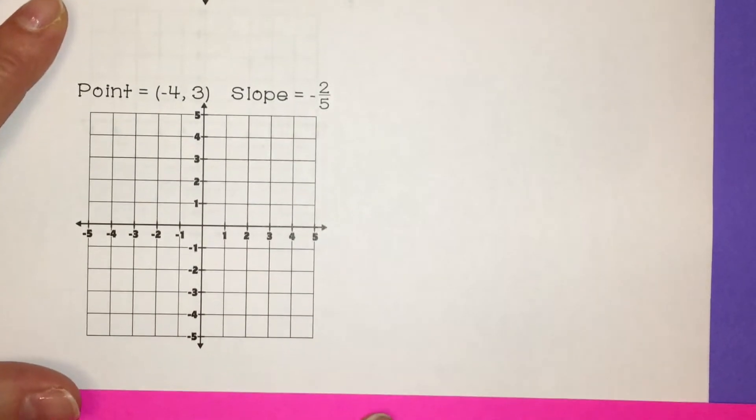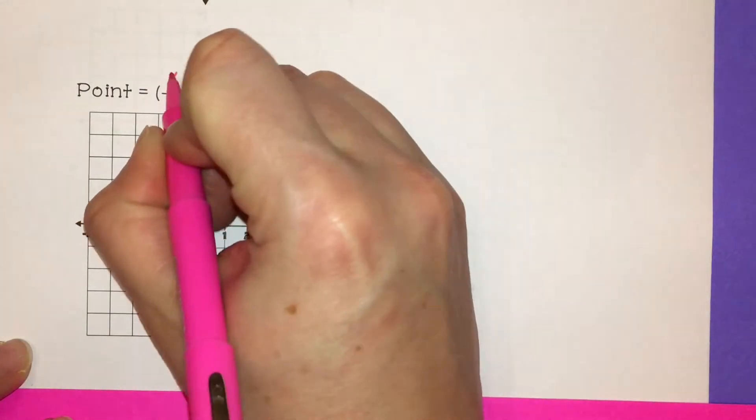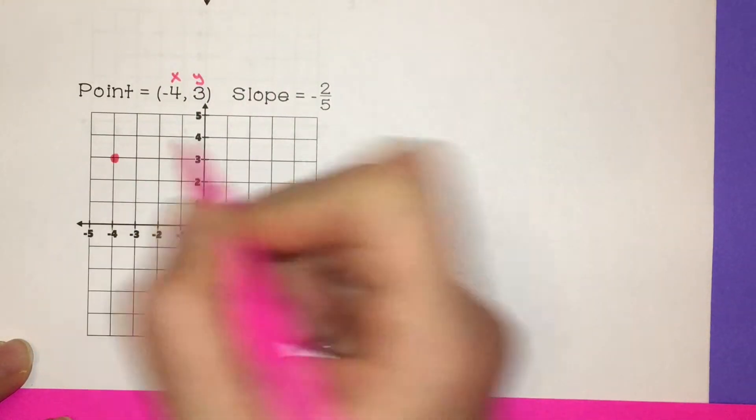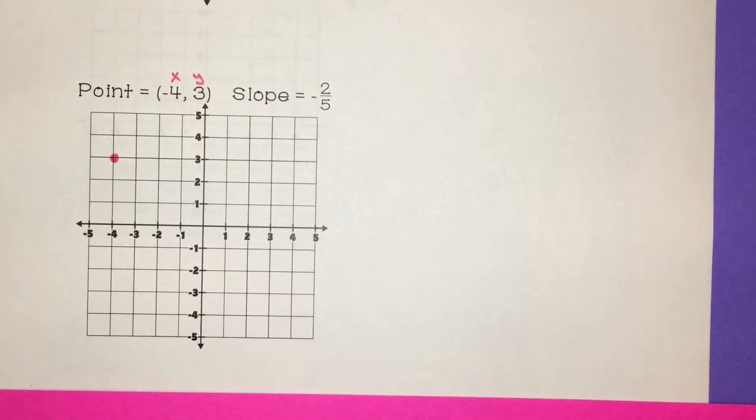All right, here's another one. So our point we're going to start at is x is -4, y is 3. Negative 4, positive 3. So here's our point.